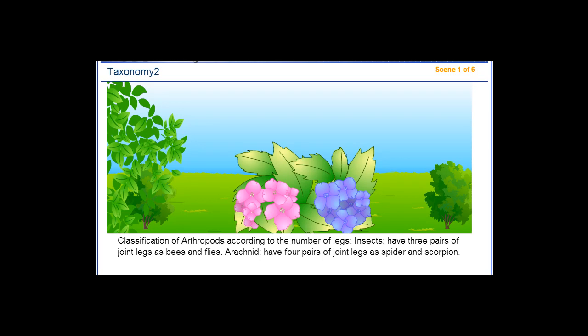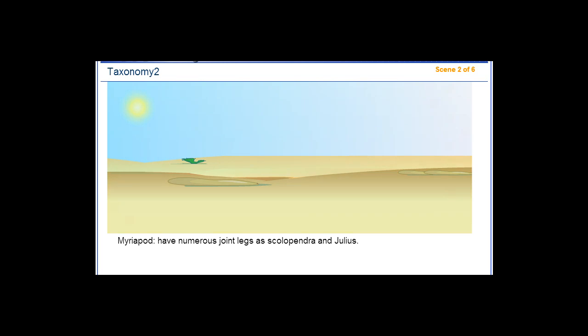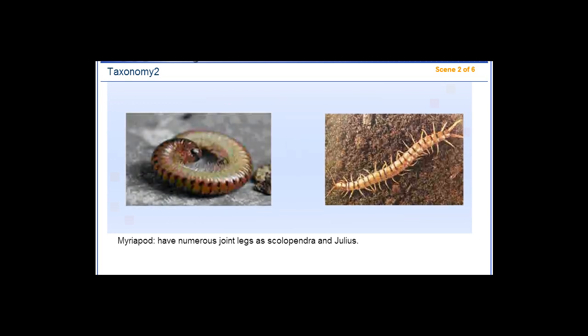Classification of arthropods according to the number of legs. Insects have three pairs of jointed legs, such as bees and flies. Arachnids have four pairs of jointed legs, such as spiders and scorpions. Myriapods have numerous jointed legs, such as scolopendra and jullius.